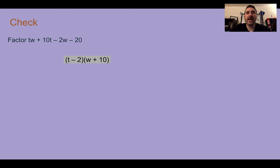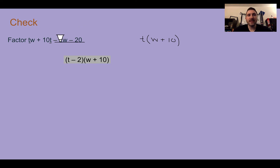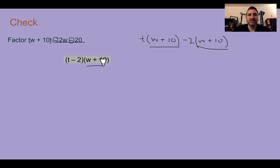Check your understanding: factor tw plus 10t minus 2w minus 20. You should get t minus 2 times w plus 10. In the first two terms, pull out a t — you're left with w plus 10. In the last two terms, take out negative 2 from both, since both are negative, and you're left with w plus 10 as well. So w plus 10 is the GCF, and the remainders combined give t minus 2.